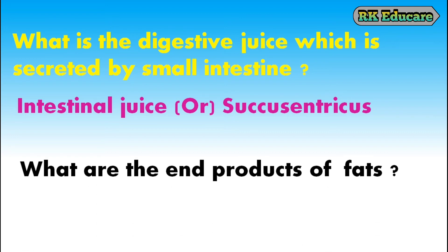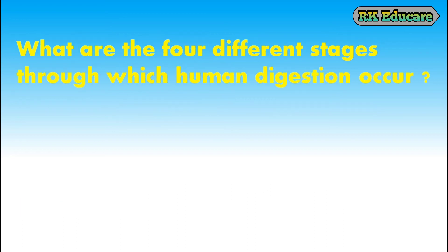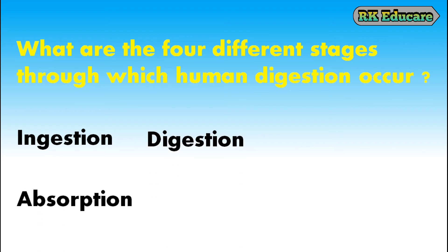What are the end products of fats? Fatty acids and glycerol are the end products of fats. What are the four different stages through which human digestion occurs? Human digestion occurs in four different stages: ingestion, digestion, absorption and defecation.